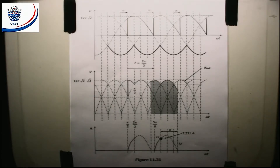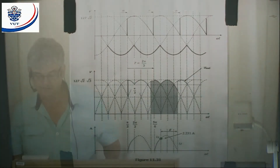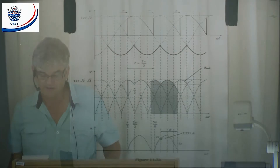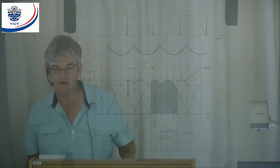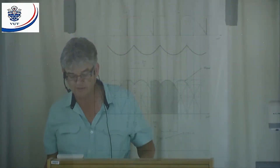Page 269. Determine the torque at 30 degrees if the back EMF is 280 volts. So the delay angle is implied there — determine the torque at 30 degrees if the back EMF is 280 volts.